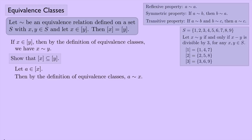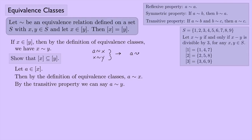By the definition of equivalence classes, a is equivalent to x. We also know x is equivalent to y. Using these two together by the transitive property, a is equivalent to y. Therefore a is an element of [y], and so [x] is a subset of [y].